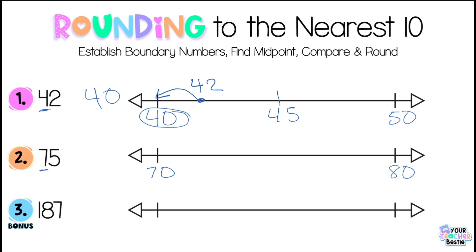Then we're going to establish the midpoint, which is 75. My number and the midpoint are the same number — what are we going to do here? Well, besties, remember: when our number is equal to the midpoint, we're going to give it that extra boost and round up. So 75 rounded to the nearest 10 is 80.